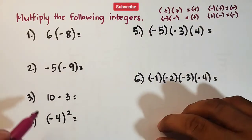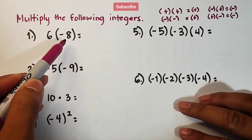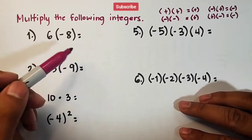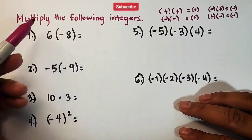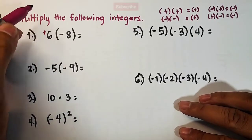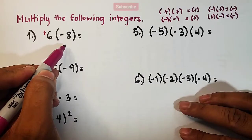Now, let's apply the rule. In number one, we are given 6 times negative 8. So it is important to know the sign of each integer. In this case, 6 times negative 8, your 6 is positive, while the other is negative.